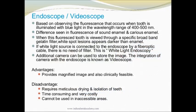The next method of diagnosis is the endoscopy filtered fluorescence method. This method is based on observing the fluorescence that occurs when a tooth is illuminated with blue light in the wavelength range of 400 to 500 nanometers. A difference is seen in the fluorescence of sound enamel versus carious enamel. When the fluorescent tooth is viewed through a specific broadband gelatin filter, white spot lesions appear darker than the enamel. If a white light source is connected to an endoscope by fiber optic cable, no filter is needed — this is called white light endoscopy. An additional camera can be used to record the image; the integration of a camera with an endoscope is known as a videoscope. Advantages include magnified images and clinical feasibility. Disadvantages include the requirement for meticulous drying and isolation of teeth, it is time-consuming and costly, and it cannot be used in inaccessible areas.